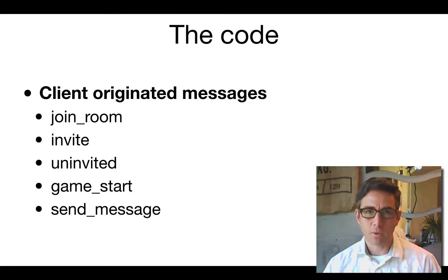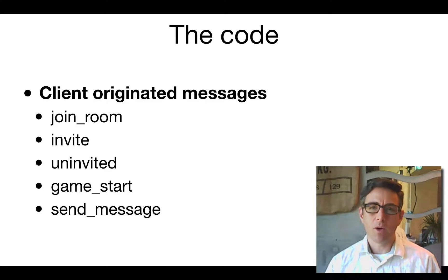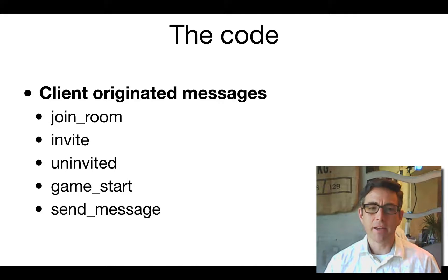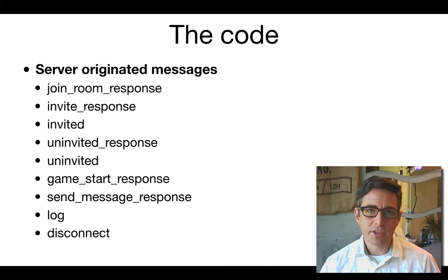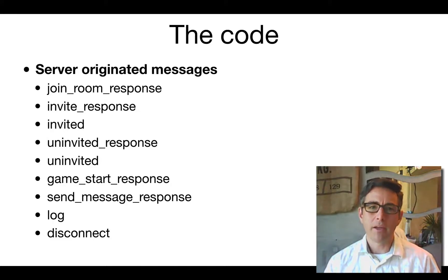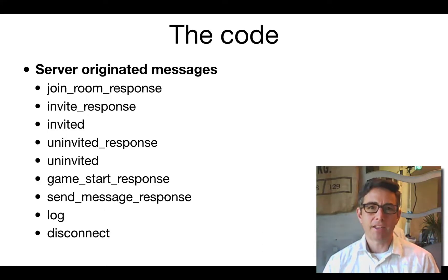To make this work, we need client-originated messages: joining a room, inviting another player, uninviting a player, starting a game (equivalent to pressing play), and sending a chat message. The server sends back responses — a join room response, an invite response to the inviter, and an invited message sent to the other player even though they didn't initiate it. For example, if A invites B, A gets an invite response and B gets an invited message.